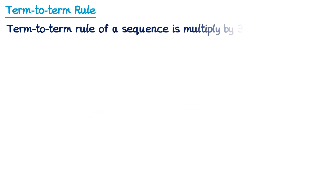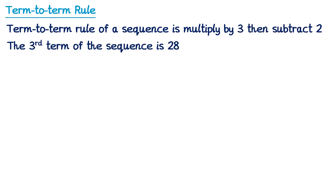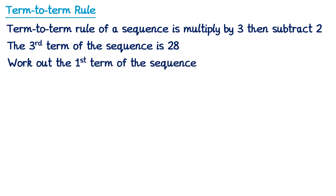In this question, the term-to-term rule is multiply by 3, then subtract 2. The third term is 28, and we need to work out the first term. So again, we've been told the third term is 28. So we're going to need to work backwards to work out the first term. We'll draw a line for the first term, a line for the second term, and we know the third term, that's 28.